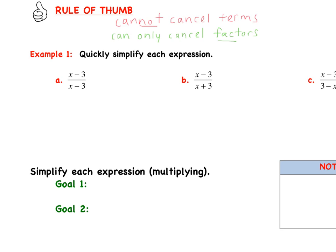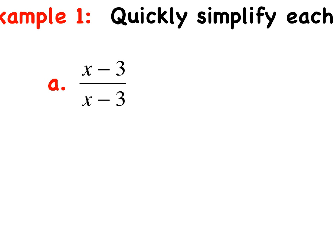For x minus 3 over x minus 3, I cannot just cancel the x's and cancel the 3's. First, I check if I can factor the numerator — x minus 3 is as factored as it gets, so I put parentheses around it. Same with the denominator. I have x minus 3 in both, so those cancel and we are left with 1.